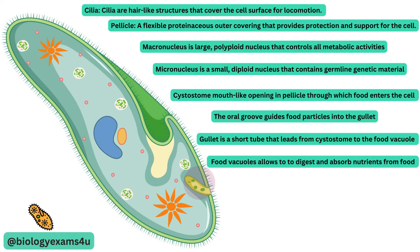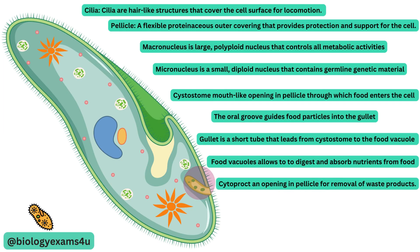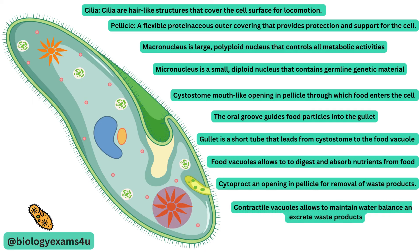Cytoproct is the opening in the pellicle through which waste products are expelled. Contractile vacuoles are responsible for osmoregulation and excretion in paramecia. They collect excess water and waste products from the cytoplasm and expel them from the cell.